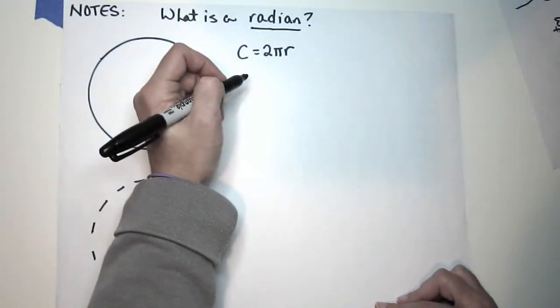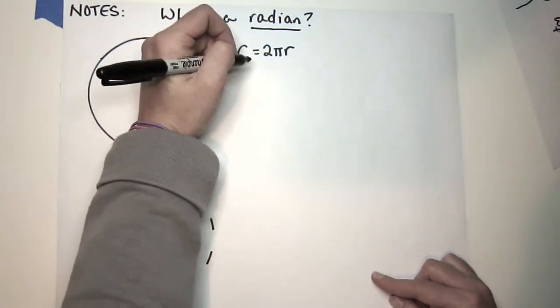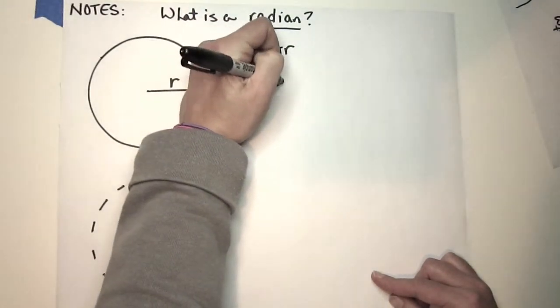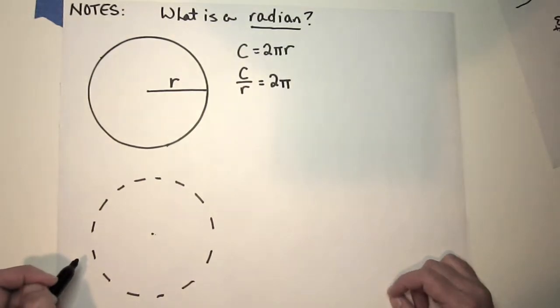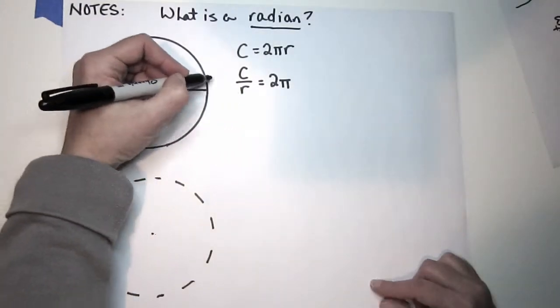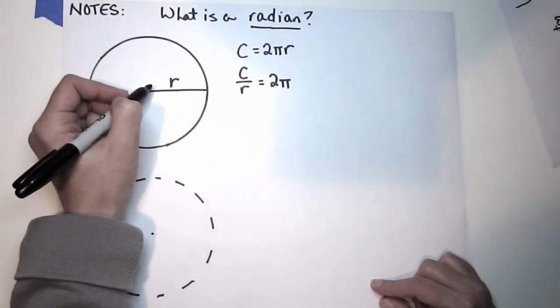If we create a ratio of c to r, we end up with a measurement of 2π for a circumference of once around to the radius of the circle.